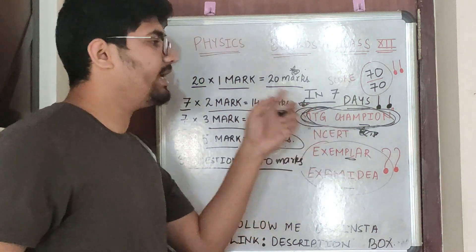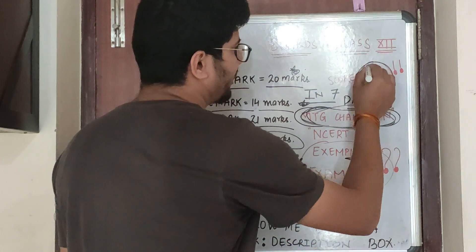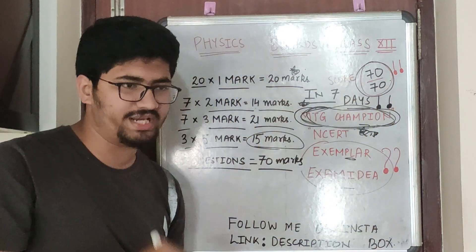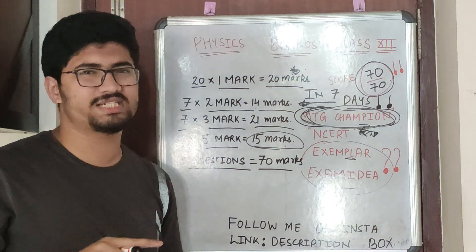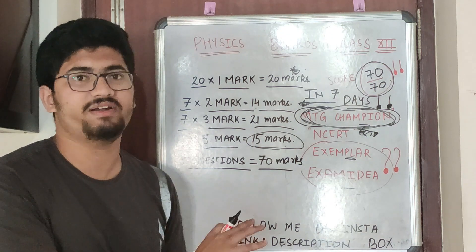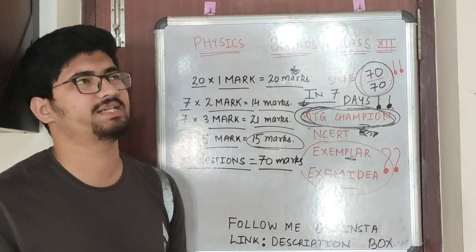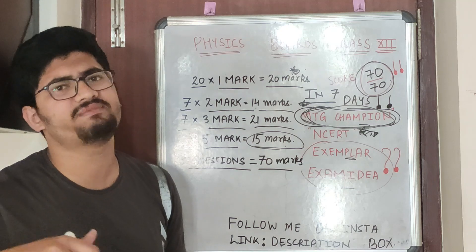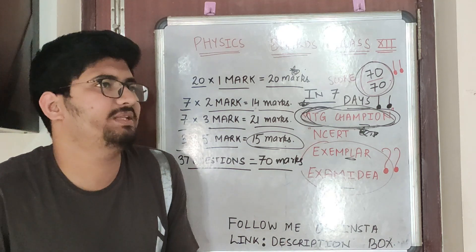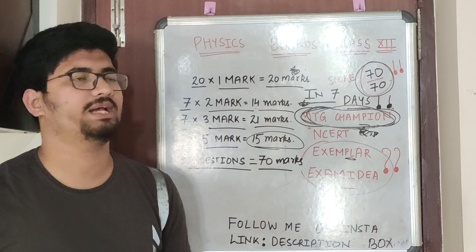I guarantee you will score 70 out of 70. I remember in physics I had around 66 to 68 — I didn't remember exactly, it was somewhere between 65 and 68. My marks were cut in practicals, I don't know why they were cut.